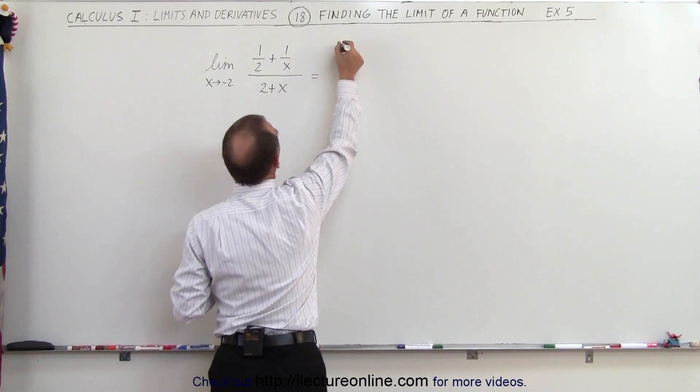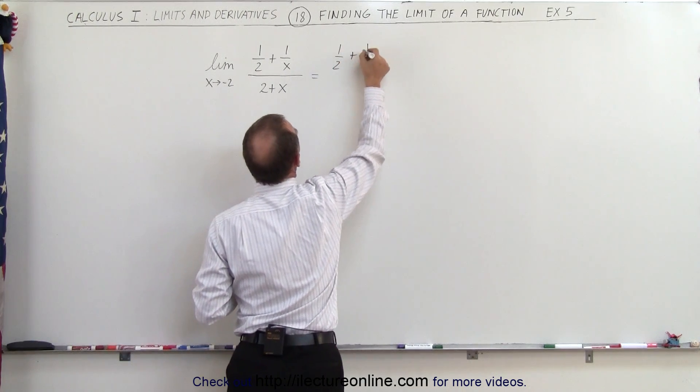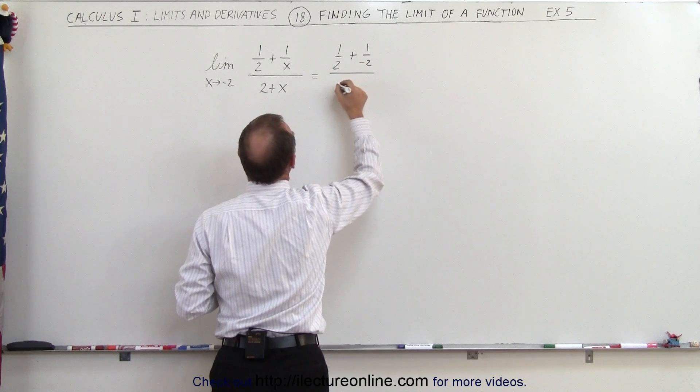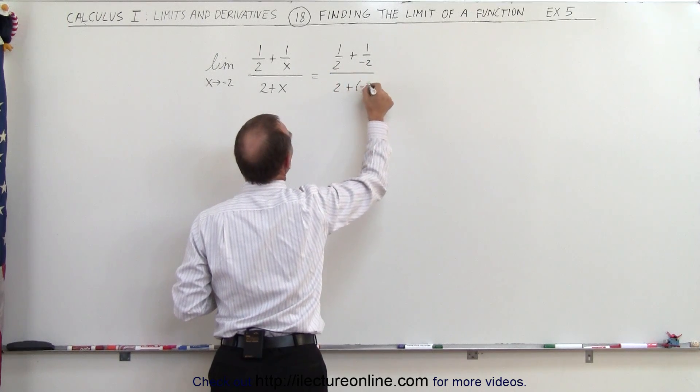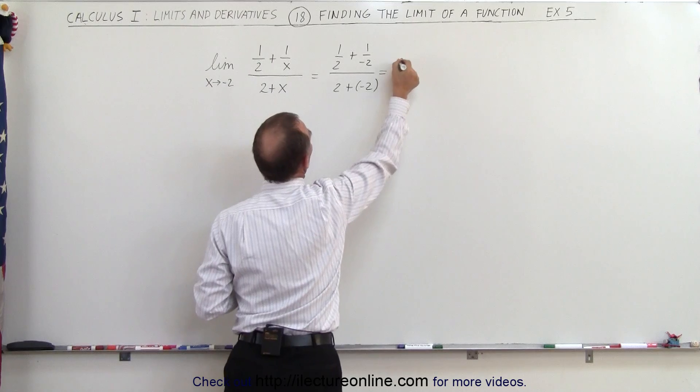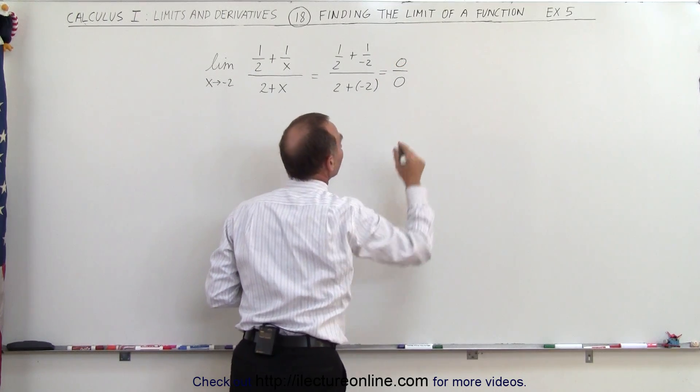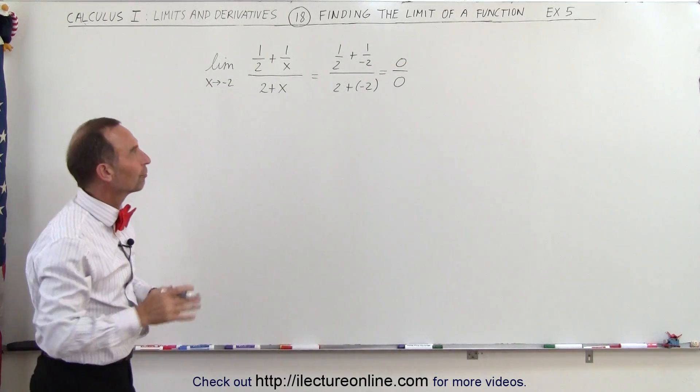So this would be equal to 1 over 2 plus 1 over negative 2 divided by 2 plus a negative 2. And here you can see that the numerator would become 0 and so with the denominator and that means it's an indeterminate form.